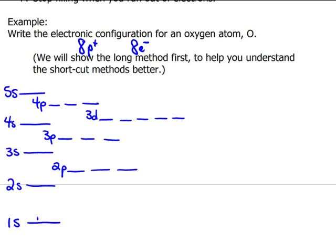So I'm going to draw one, two. These two arrows represent the first two electrons for oxygen. So for oxygen's electronic configuration, it starts out with 1s². I use a superscript 2 to say there are two electrons in that 1s orbital subshell.